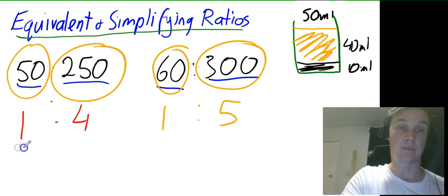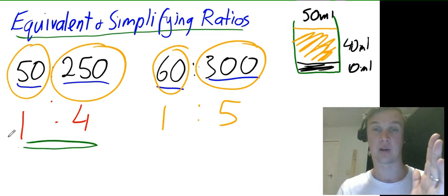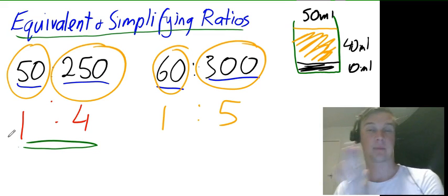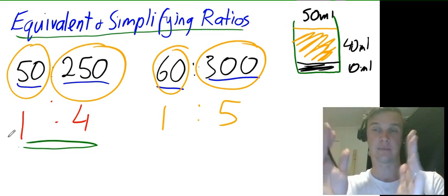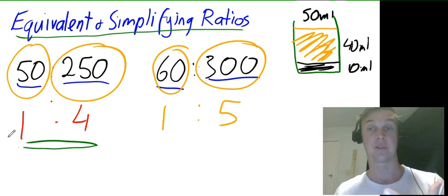I know that my part is stronger because I have 1 part Milo, 4 parts milk. My brother has 1 part Milo, 5 parts milk. So that's how you simplify ratios.